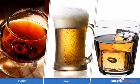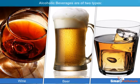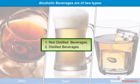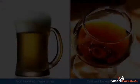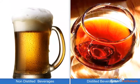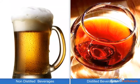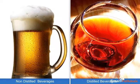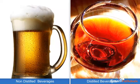Based on the percent of alcohol present, alcoholic beverages are divided into two types, namely distilled beverages and non-distilled beverages. Non-distilled beverages like beer contain a lower percent of alcohol, whereas distilled beverages contain a higher percent of alcohol.